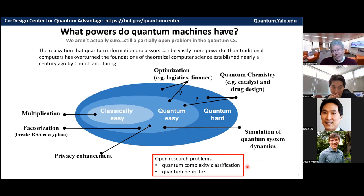So interestingly, we don't know the full answer to what powers quantum machines have. It's still a partially open problem in the theory of quantum computer science. But the realization that hardware makes a difference has completely overturned the foundations of theoretical computer science.